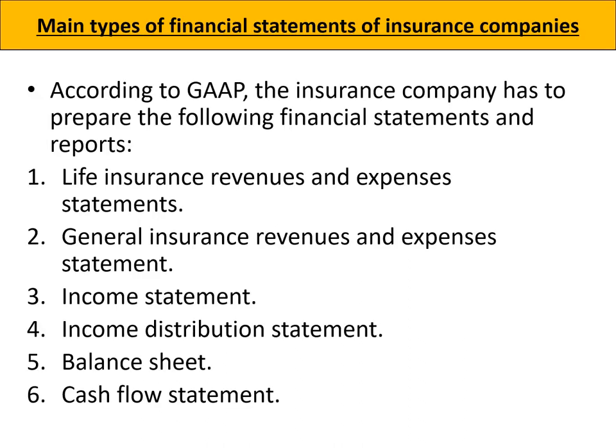We are going to find that there will be six types of these statements: first, the life insurance revenues and expenses; second, the general insurance revenues and expenses; third, the income statement; then the income distribution statement; then the balance sheet; and then the cash flow. So we will mainly find two sub income statements related to life and general insurance, and then we head to the main statements: income statement, balance sheet, cash flow statement, and income distribution statement.